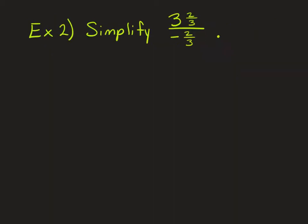Example 2, simplify 3 and 2 thirds divided by negative 2 thirds. And this is a period. I'm going to go ahead and erase it so that it's not confusing there. I want you to remember a couple of things here. That fraction line is a division symbol. So though this problem looks a little different, you're just dividing fractions.